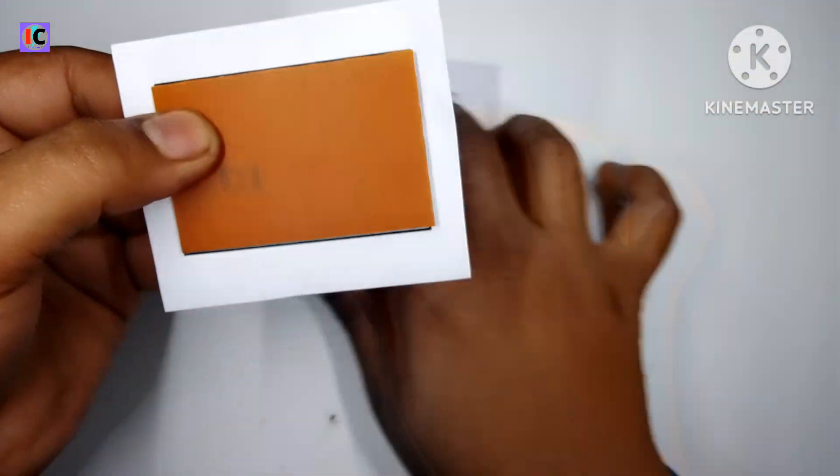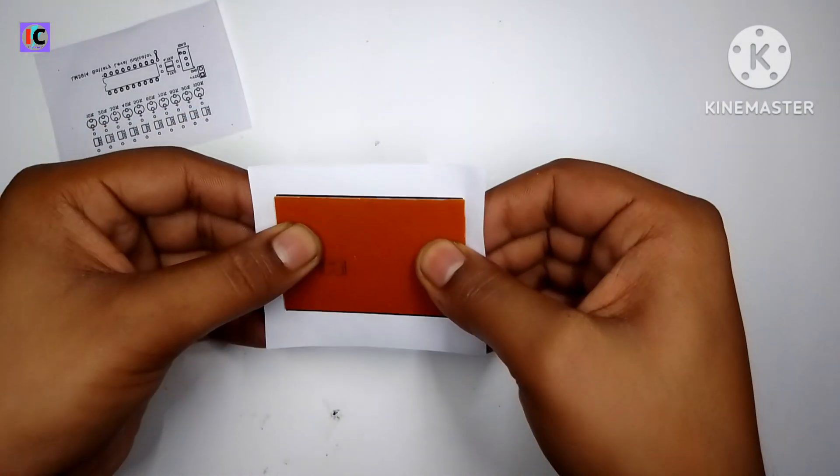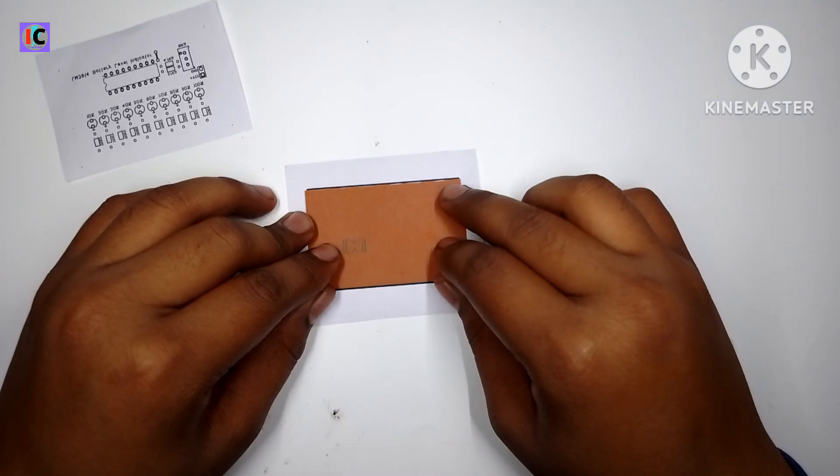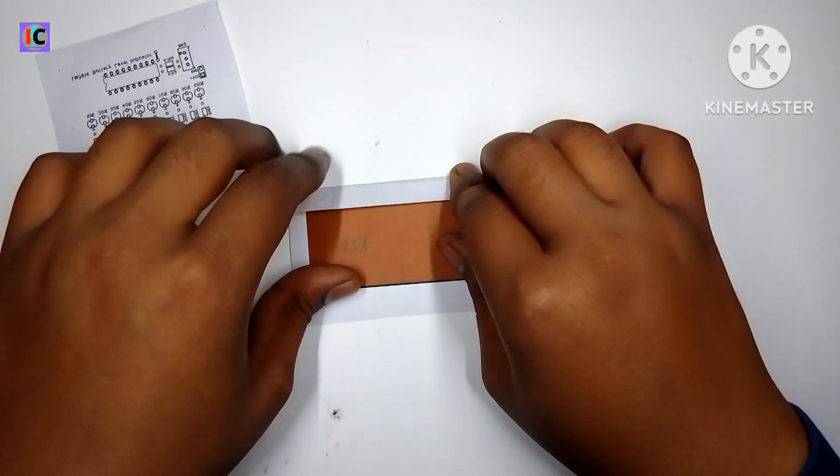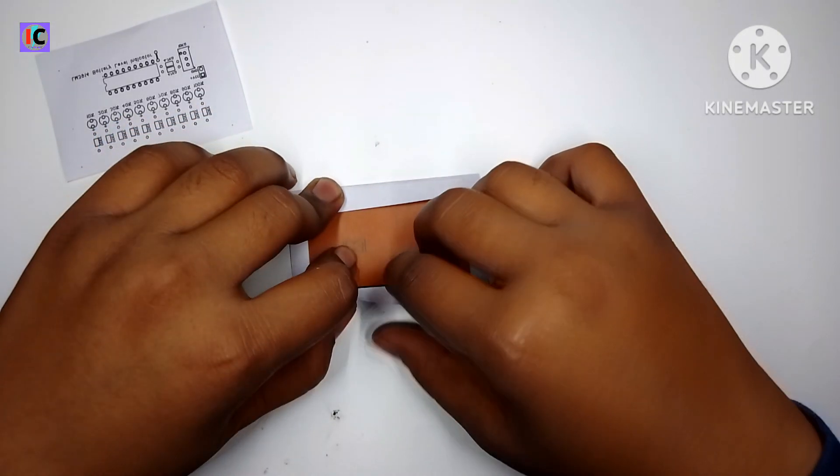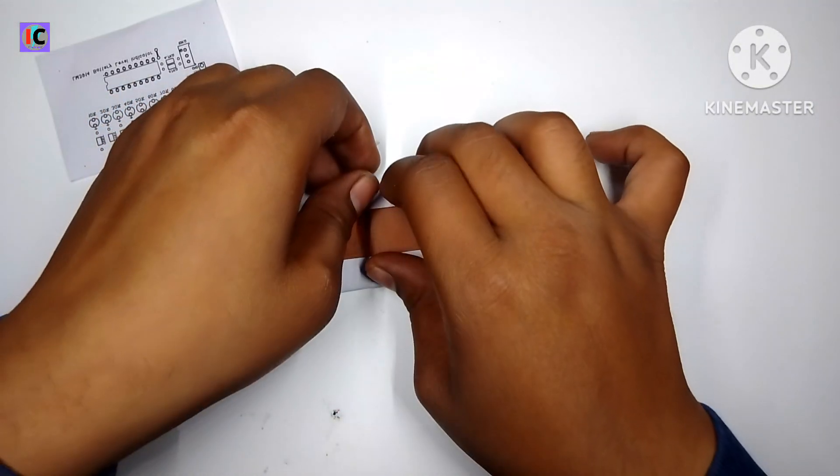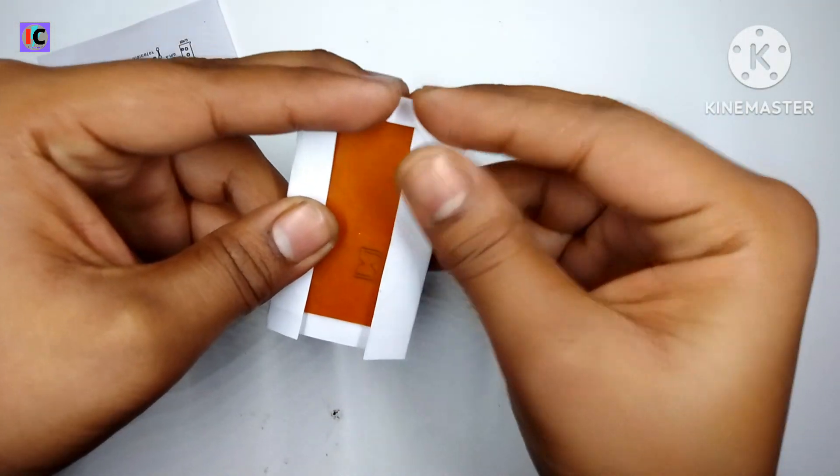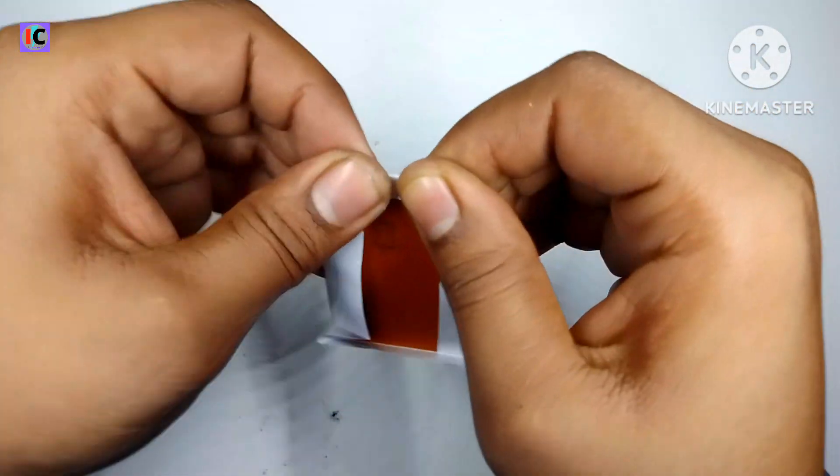Here we are using the iron heating method. The printing is from a laser jet printer and I am using normal A4 size paper. You can also use photo paper which is also known as glossy paper.